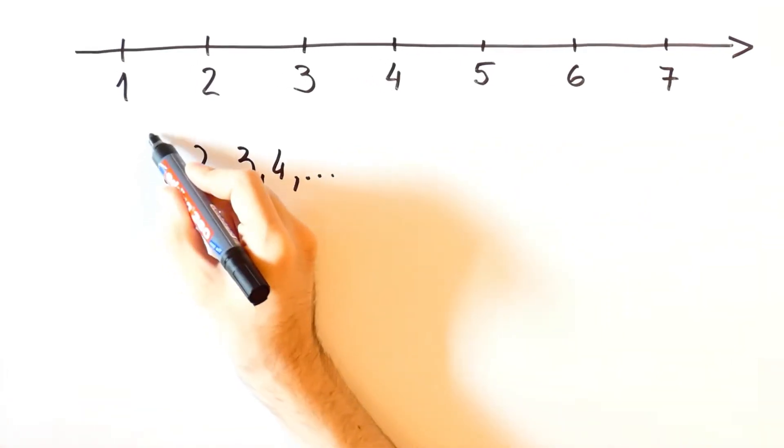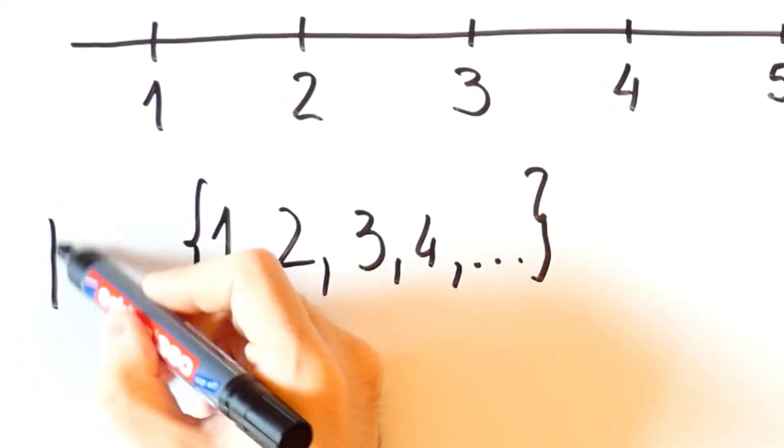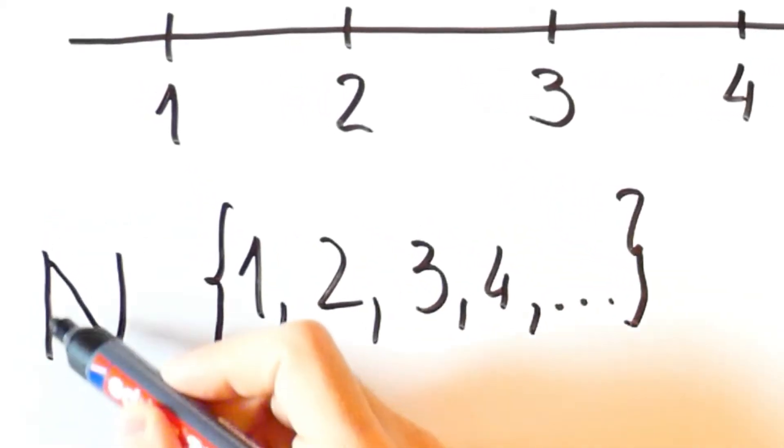And the set of all those numbers is denoted by capital N with additional line like this.